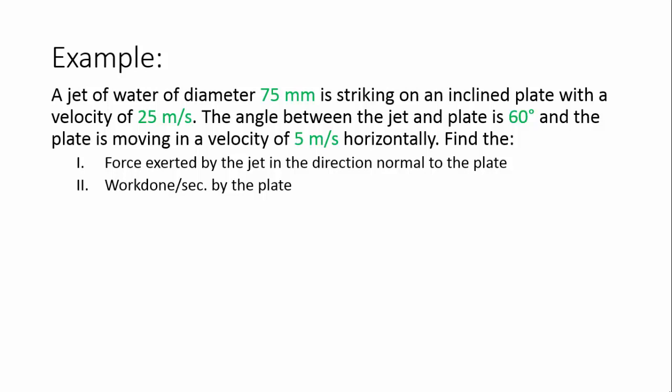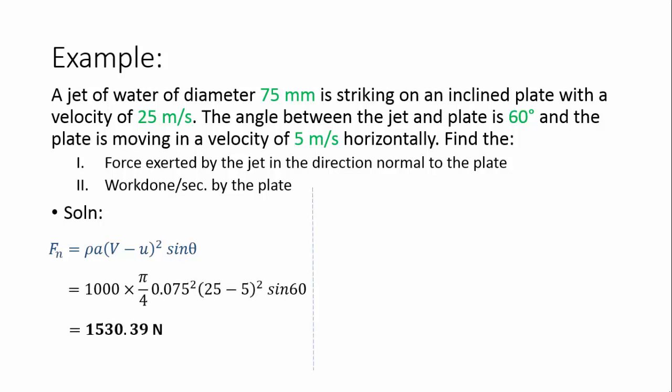Let's consider a numerical example. The diameter of the water jet, velocity of the water jet, inclination of the plate, and velocity of the plate are given. We have to find the force exerted by the jet in the normal direction of the plate, and also the work done by the plate. The force exerted normal to the plate is rho times A times (v minus u)² times sine theta. To calculate the work done, we multiply the force exerted along the x direction by the velocity of the plate, since the plate is moving in the x direction.